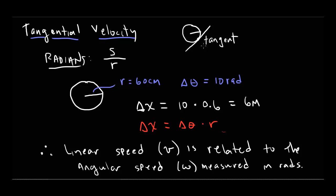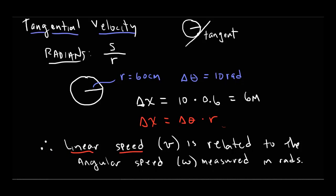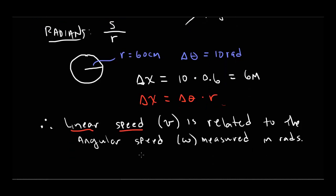I want to revisit the word 'tangential velocity.' The tangent is a line — it's a line on a circle. When we're dealing with linear speed for a system that's in circular motion, we call that tangential speed, because it's linear like the tangent is a line, but it's related to a circle. A tangent is a line touching a circle. Tangential velocity is linear velocity in a circular reference frame.